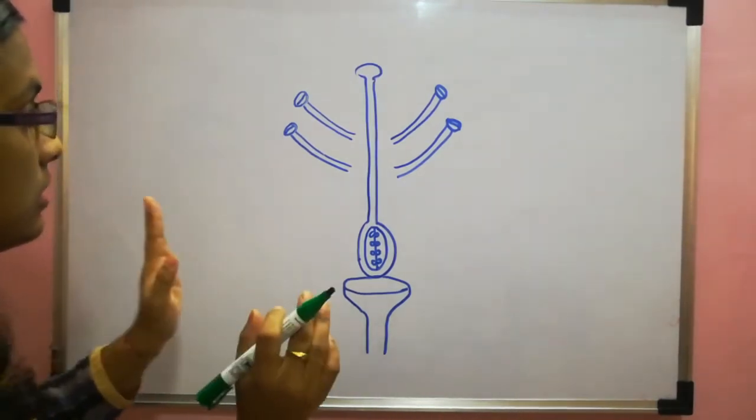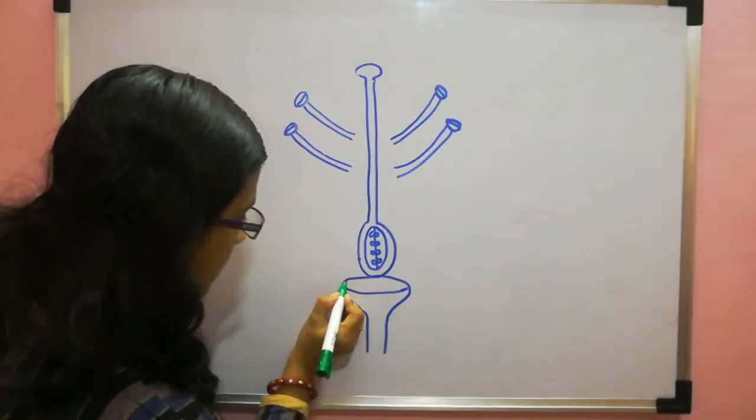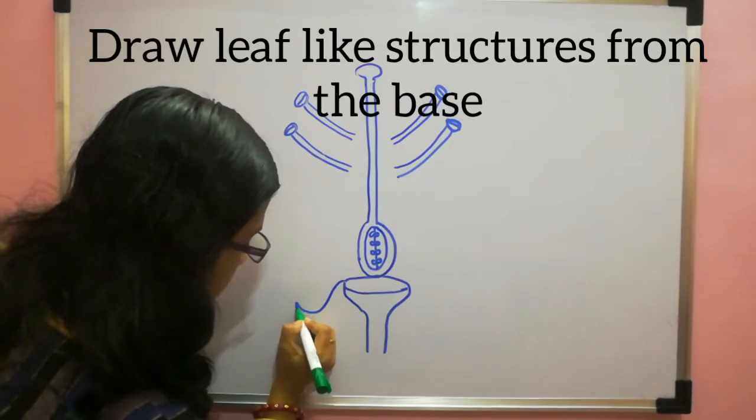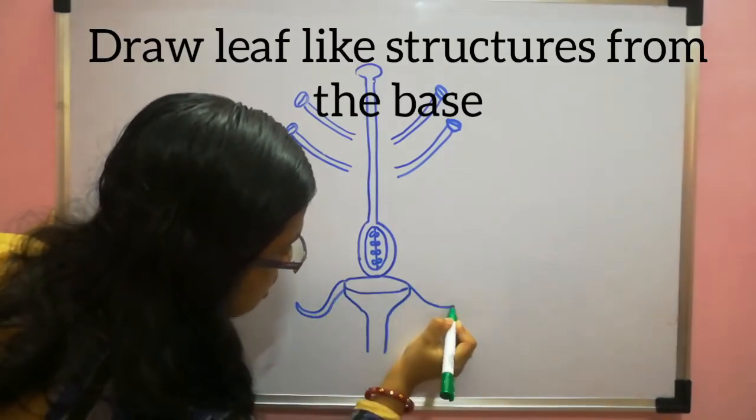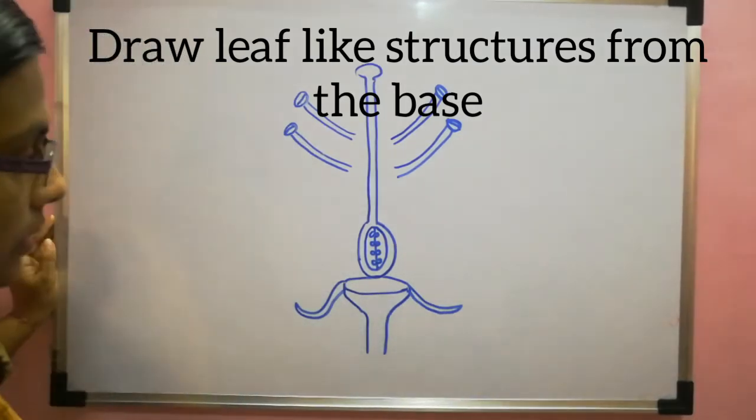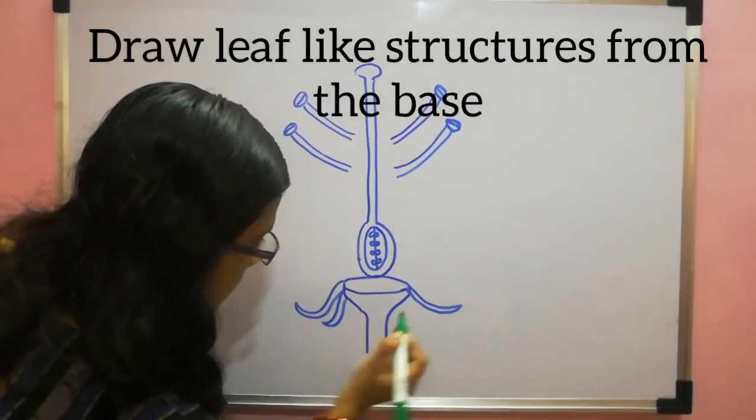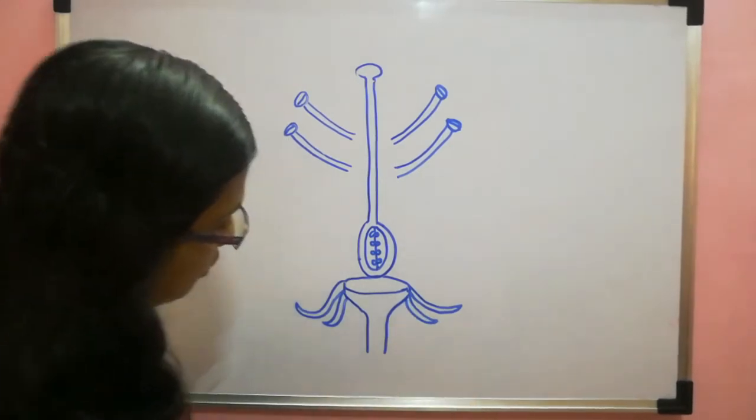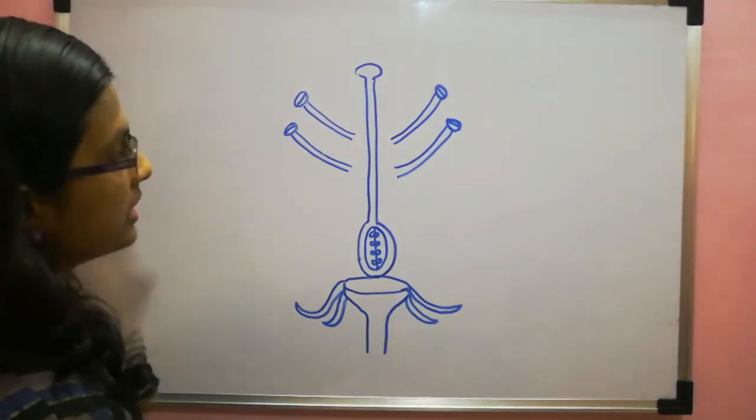Now next thing is you have to make the petals and sepals. Sepals you can make here at the base. You can make leaf like structure. Sepals are green leafy structures. So make like this leaf down. And make some more also here. The functions of sepals is it protects the flower during the bud stage.